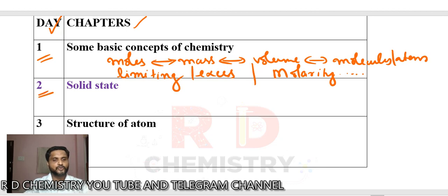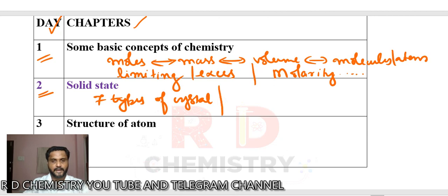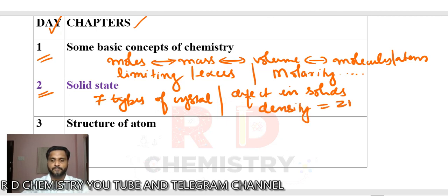Day 2: Solid state. Concentrate on the 7 types of crystal systems and defects in solids. Learn how to calculate density of a solid using the formula: density = Zm / (A³ × Nₐ). Also learn how to predict the formula of a compound — if some atoms are at corners, some at faces, some at body center — how to use that to get the empirical or molecular formula.